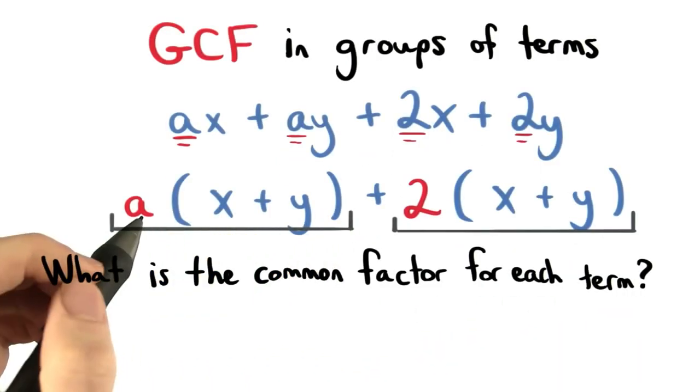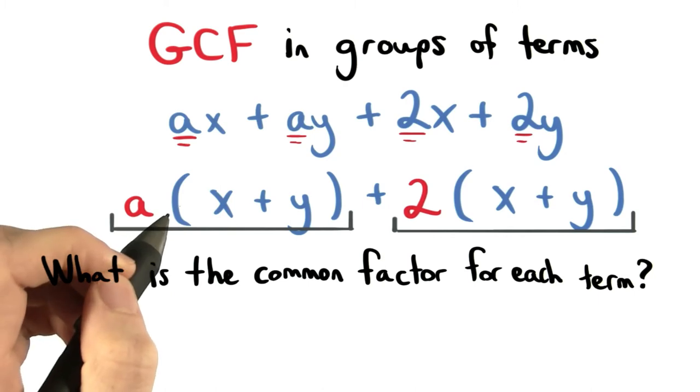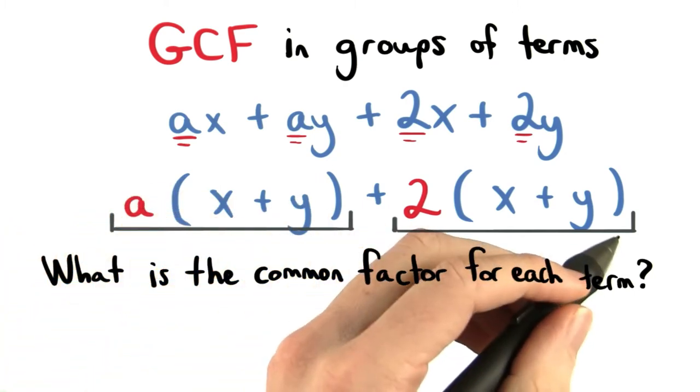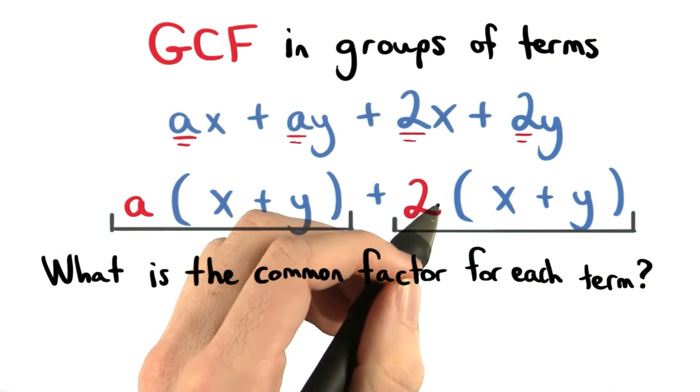This would be one term made up of two factors, a times x plus y. This would be another term made up of two factors, 2 and x plus y.